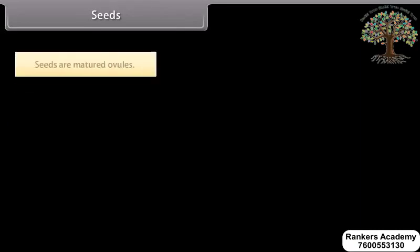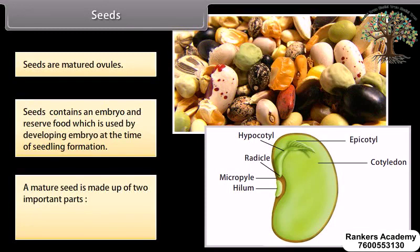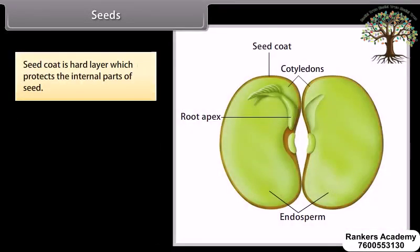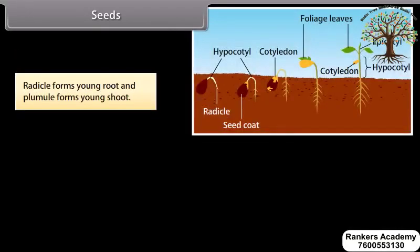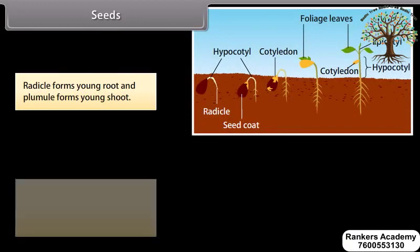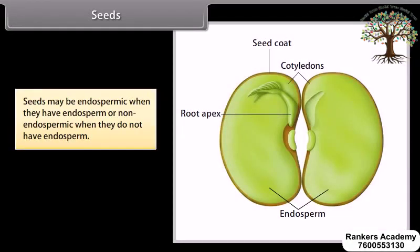Seeds are matured ovules. Seeds contain an embryo and reserve food which is used by the developing embryo at the time of seedling formation. A mature seed is made up of two important parts: seed coat and embryo. The seed coat is a hard layer which protects the internal parts of the seed. The embryo is made up of radicle, plumule, and cotyledons — the radicle forms the young root and the plumule forms the young shoot. Seeds are monocotyledonous when they have one cotyledon, or dicotyledonous when they have two cotyledons. Seeds may be endospermic when they have endosperm, or non-endospermic when they do not have endosperm.